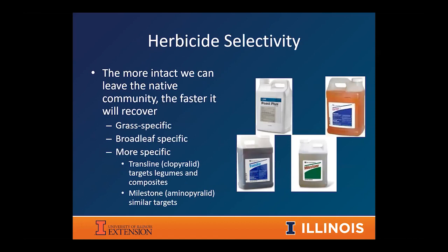Regarding selectivity: broadly, you have options for either grass-specific herbicides or broad-spectrum herbicides. There are some more recently developed options that get even more specific, often used in prairie restoration. One that's a little more specific is clopyralid, trade name Transline — we've used it successfully to treat kudzu vine, which is a legume growing in tree canopies. We don't want to harm the trees but want to take out the kudzu, so that's been a very useful tool for control of that problematic invader.